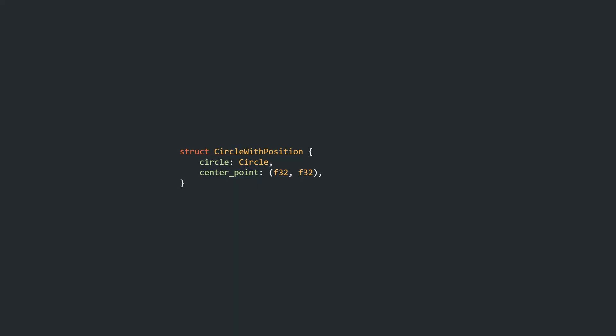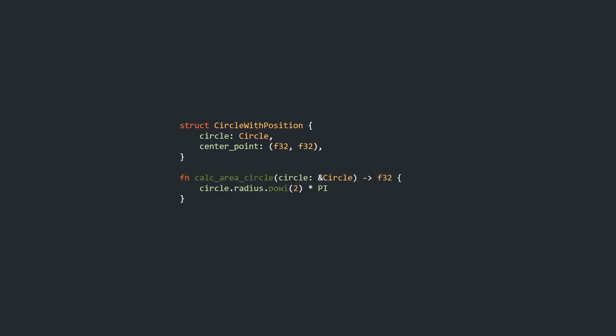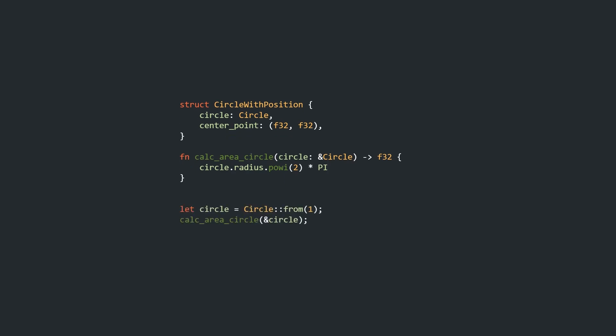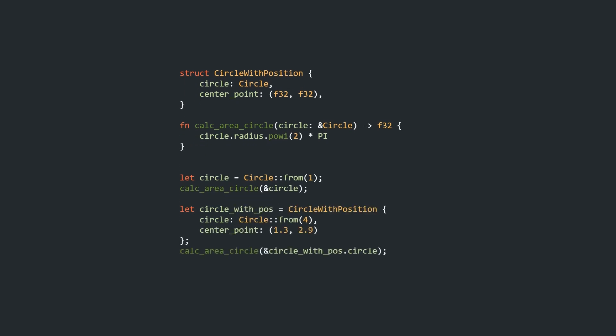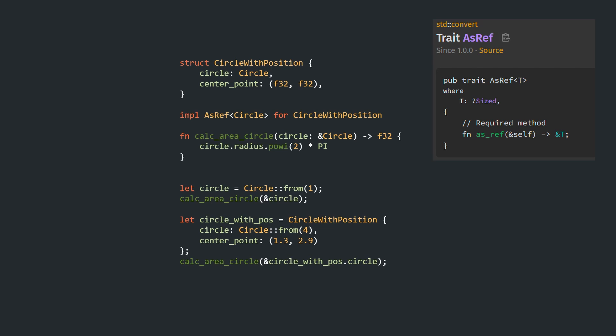Now let's get back to Rust's borrowing conversion traits. Assume we have the necessity to create circles which have their center position offset from the origin. Because we don't want to touch our Circle struct itself, or because the struct is defined in an external crate, we create a wrapper called CircleWithPosition that holds a Circle alongside a center point. The problem is that all of our utility functions, like the one that calculates the area of a circle, accept a reference to a Circle — not to our new CircleWithPosition struct. Rust has a trait that will save us here: AsRef. We can implement AsRef<Circle> for CircleWithPosition, and the implementation is really simple.